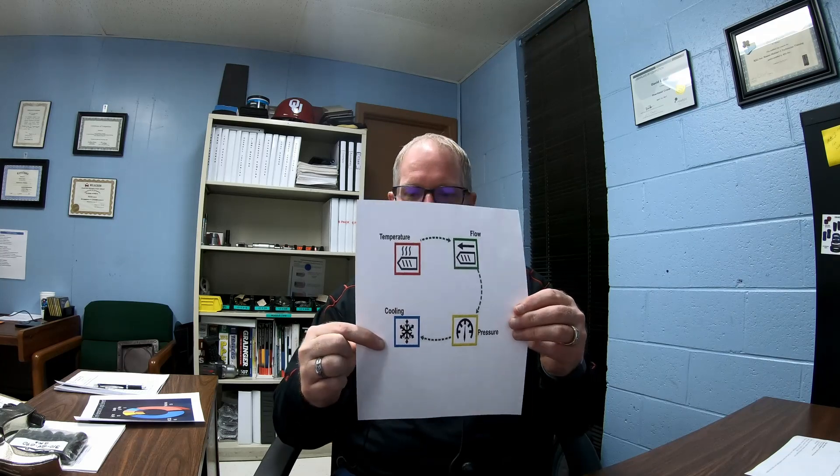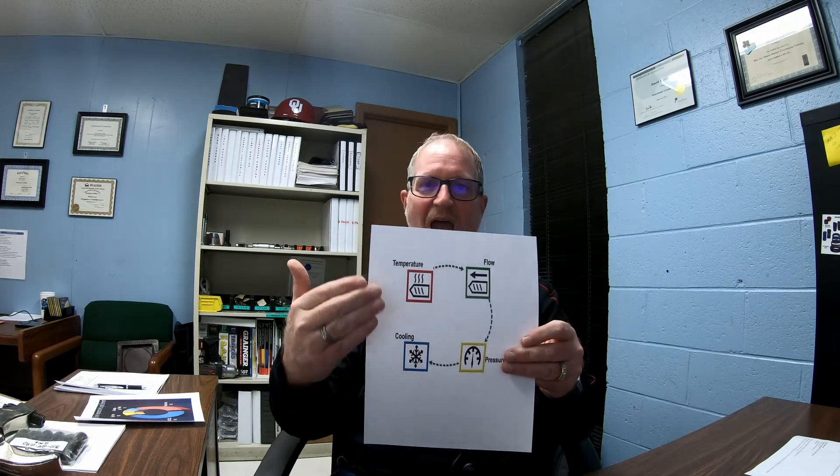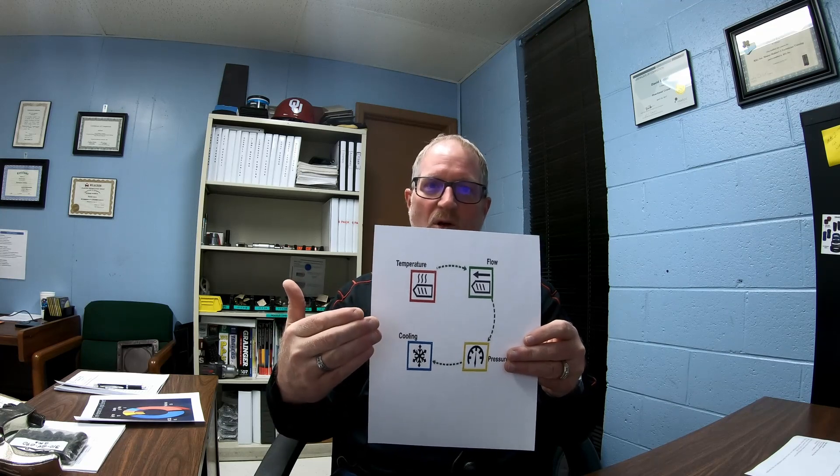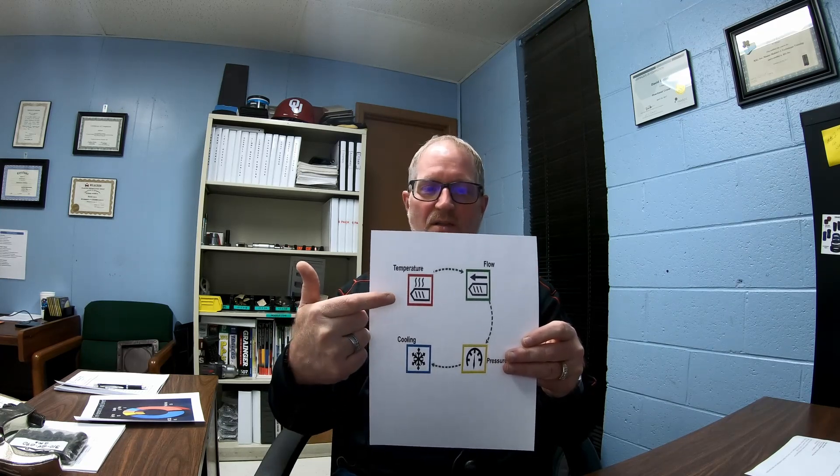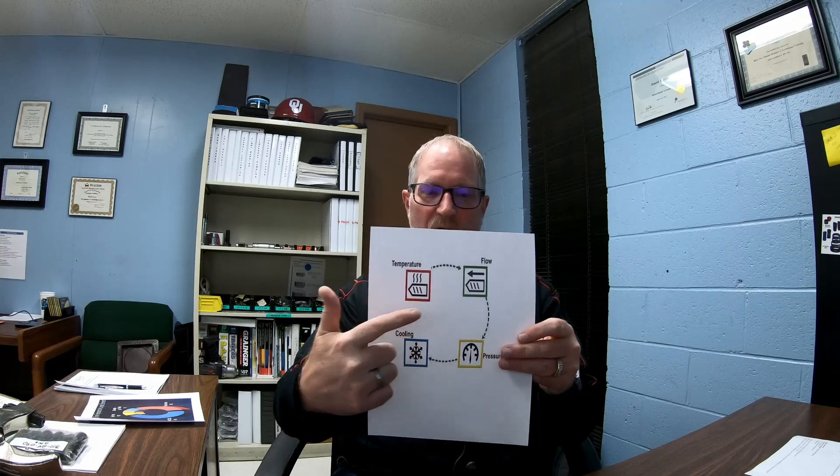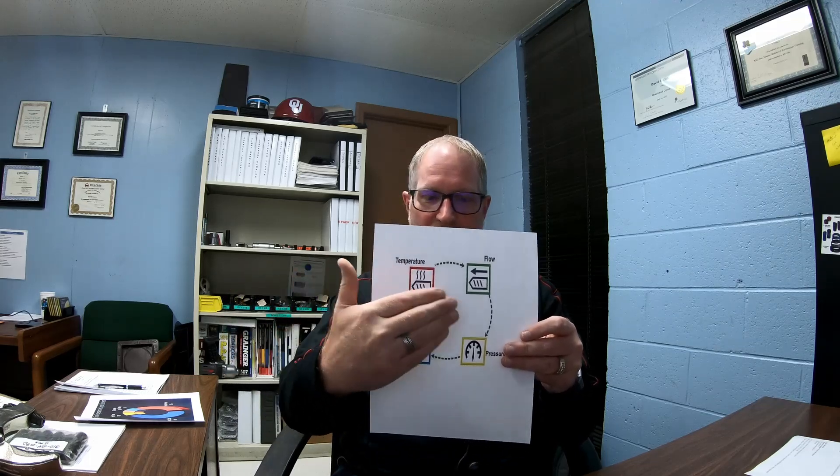In injection molding, you can have ultimate control through these four processing variables. They are primarily heat, pressure, flow, and cooling. If you look at this diagram I put together, you have temperature, then flow, then pressure, then cooling — and cooling takes up almost half of your total overall cycle time, more or less.